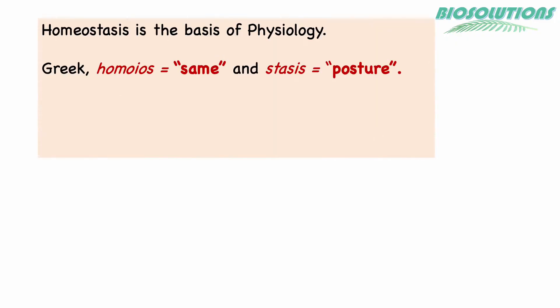Homeostasis is about maintaining the body's internal environment so that it is stable and works efficiently. Our body has around 100 trillion cells and their metabolisms must harmonize for normal functioning.